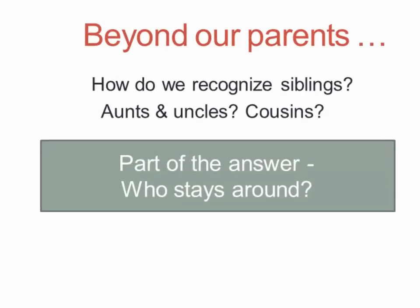Part of the answer does appear to be simply who stays around and who involves themselves in caring for us. This is something social anthropologists have stressed quite vigorously — they think it's contrary to Hamilton's rule, but it's actually not. All that matters for Hamilton's rule is that there be some proximate mechanism for recognizing kin; it says nothing about what sort of mechanism that might be.